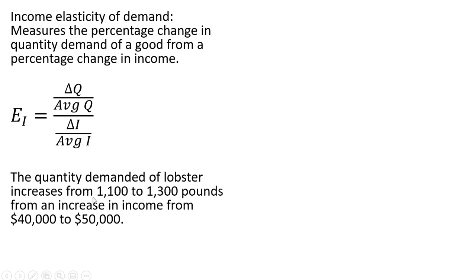The quantity demanded of lobster increases from 1,100 to 1,300 pounds from an increase in income from $40,000 to $50,000. What is the income elasticity of demand?